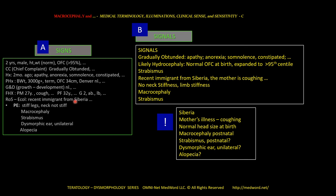Now we can begin a synthesis. We go from A to B — A is the history. What can we extract from these signs listed here into signals? This depends on how sensitive and how knowledgeable you are. What calls our attention in particular is the origin in Siberia, the sickness of the mother and her coughing, that the head was normal at birth in terms of measurement, and that macrocephaly is very likely postnatal. Strabismus — was it postnatal? We should find out; maybe there are photographs. The dysmorphic ear — is it unilateral? We need to confirm.